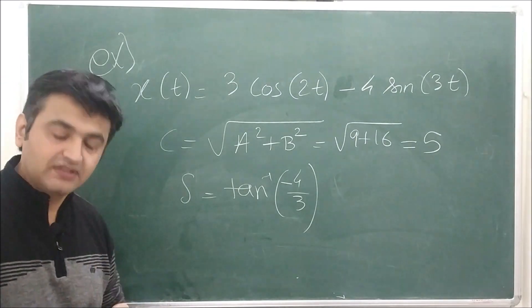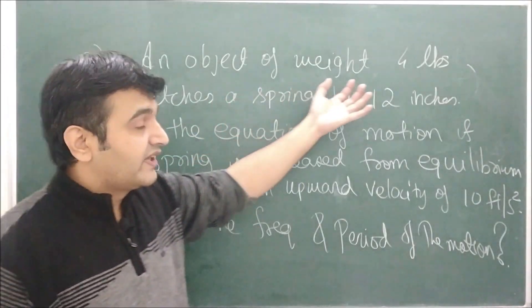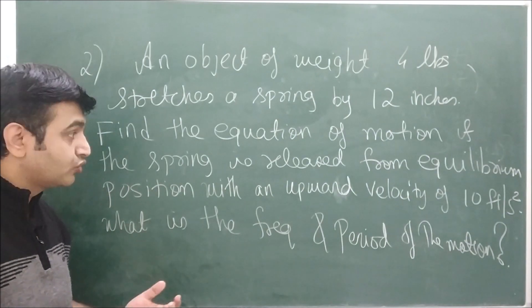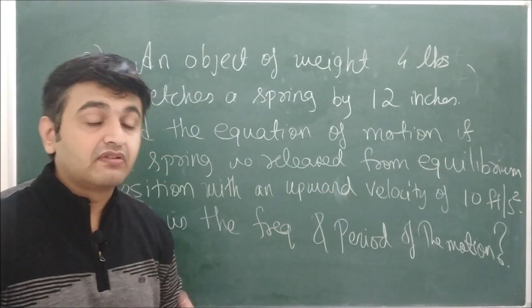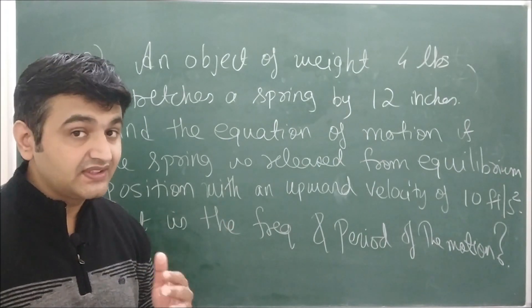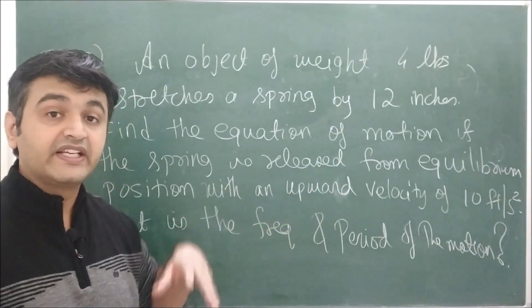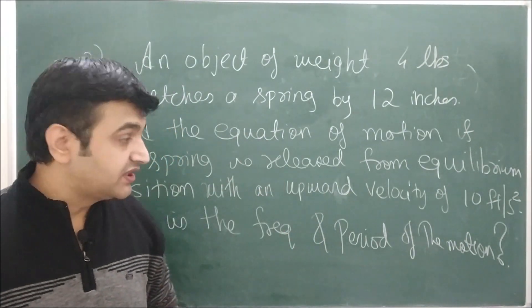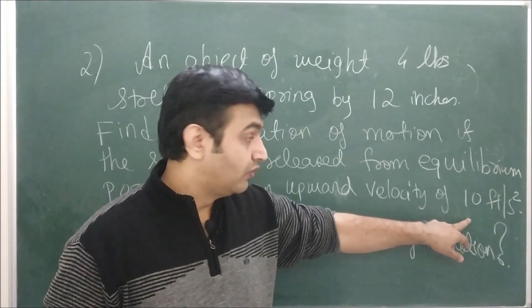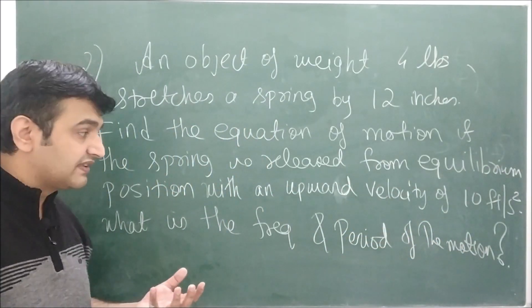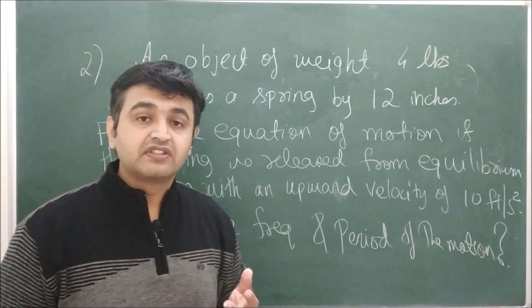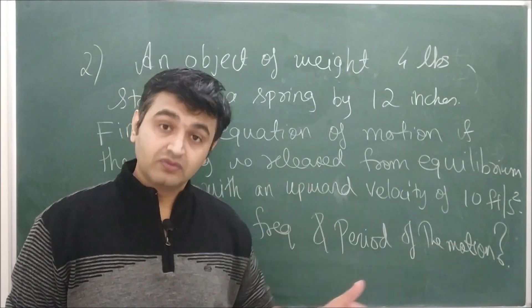Now for a full worked example: an object weighing 4 pounds stretches the spring by 12 inches. Find the equation of motion when released from the equilibrium position with an upward velocity of 10 feet per second. The initial conditions are x(0) = 0 (released from equilibrium) and x'(0) = −10 (upward velocity is negative). We also need to find the frequency and period.